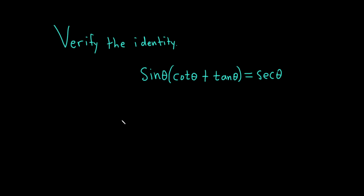In this problem, we're being asked to verify this trigonometric identity. Let's go ahead and jump into it. When verifying a trig identity, one way to do it is to start with one side and show it's equal to the other side. Usually it's better to start with the more complicated side. In this case, the left-hand side is more complicated, so we'll start with that.